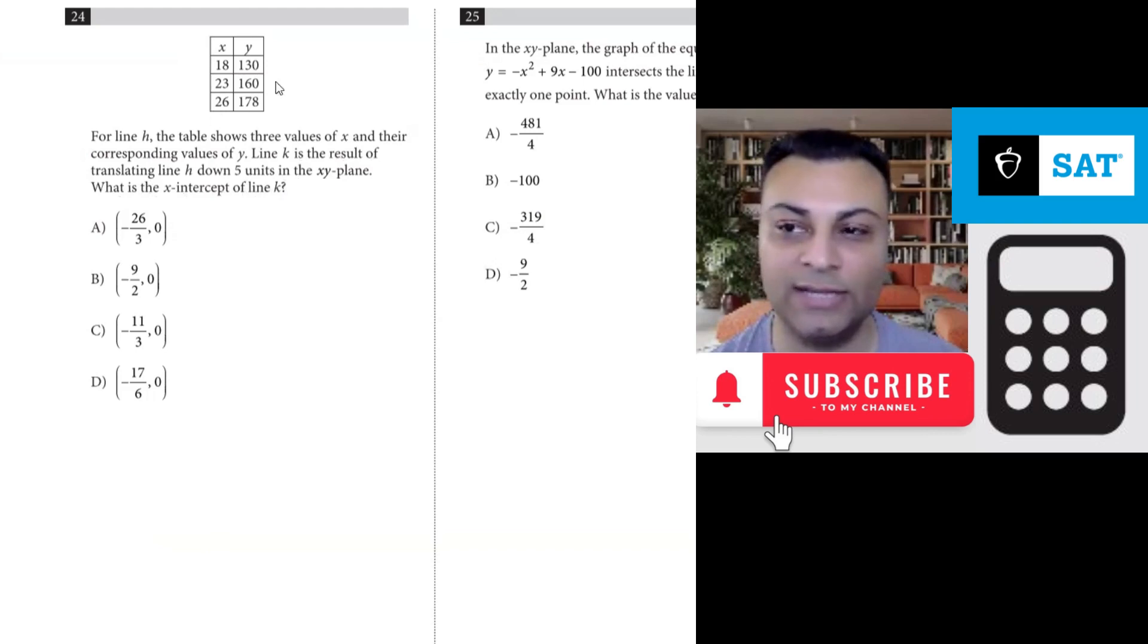So this is line H we have over here. This whole thing is for line H. What we want to do is get the equation of line H. We're given some points, these are coordinates, ordered pairs. This is 18, 130. This is 23, 160 and so on. We just need two points, we don't really need the third one. I'll use the first two.